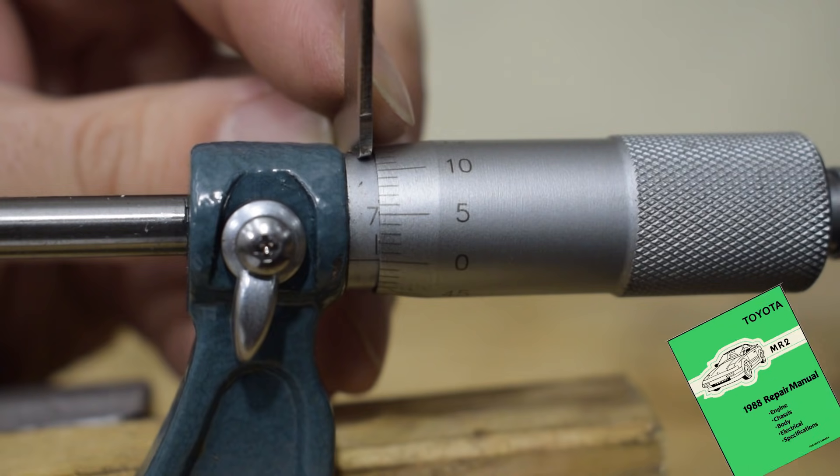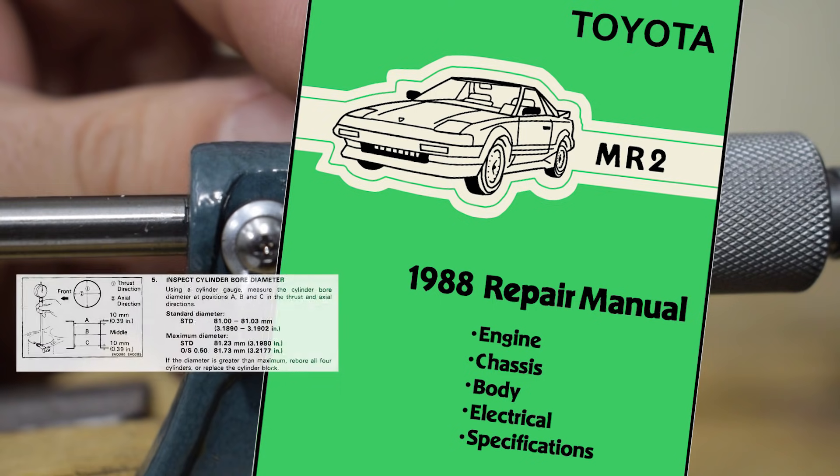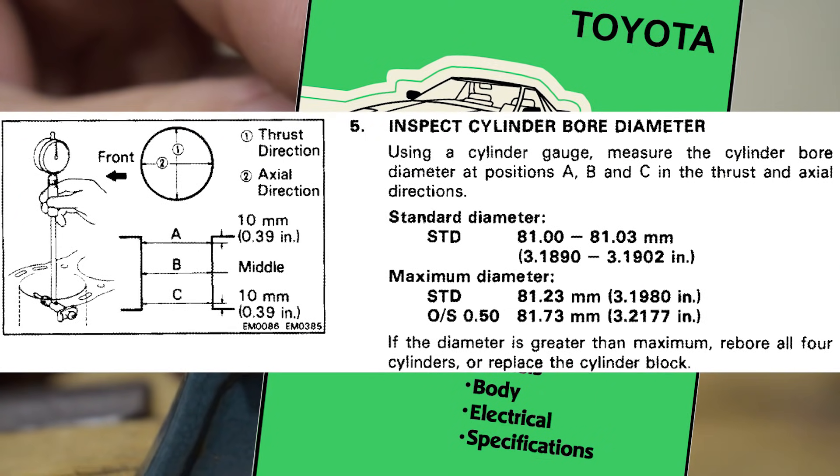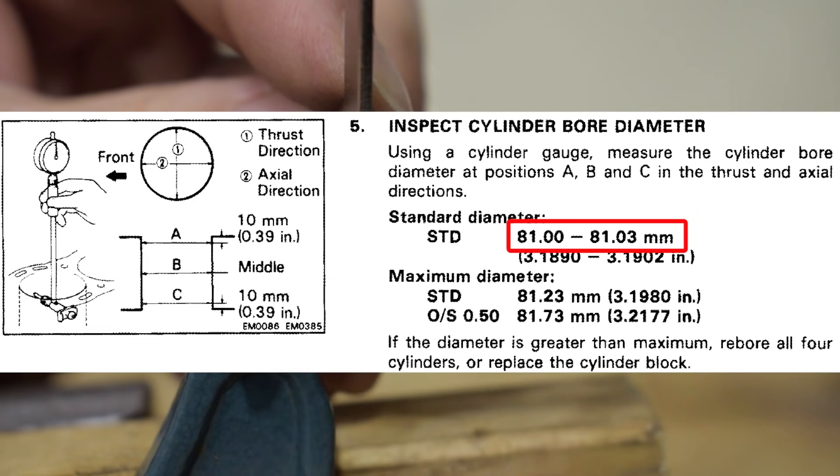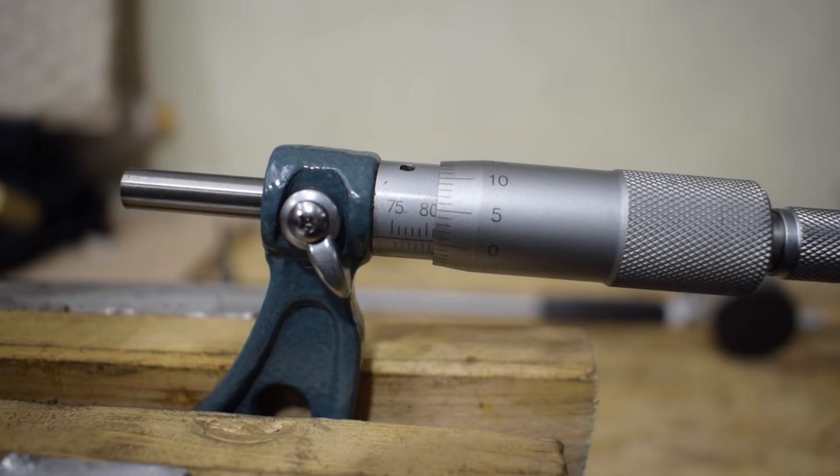Now we're going to consult our factory service manual or any other suitable source to see what kind of bore dimensions we should be seeing. This is a Toyota 4AGE engine block and the factory service manual tells us that our STD bore dimensions are between 81 and 81.3 millimeters. So we'll set our micrometer to 81 millimeters exactly and lock it again.